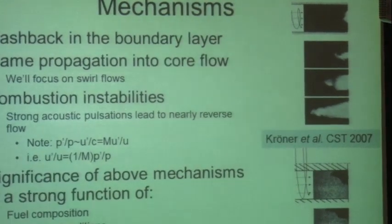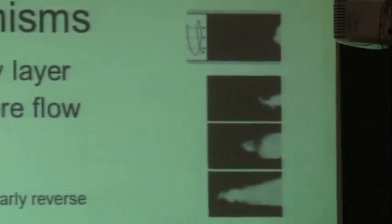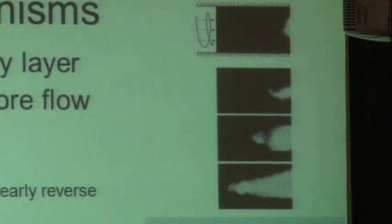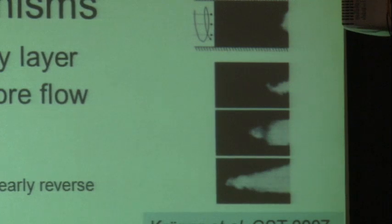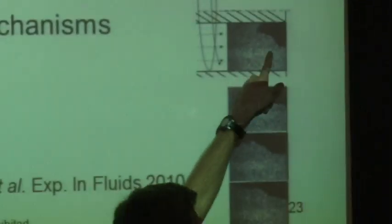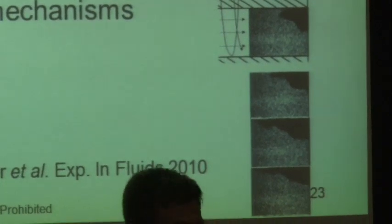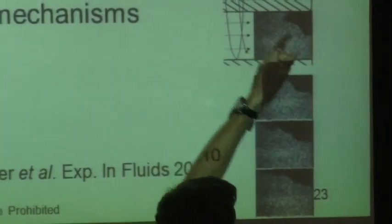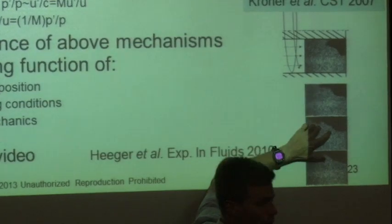This top-right image is an example of flashback in the core flow, showing the flame moving upstream. In this case, the flow is moving way faster than the flame speed — yet the flame is still propagating upstream, partly because the flow has swirl, which I'm indicating with that arrow. The bottom image is a Mie scattering image of a flame flashing back in a boundary layer. The flow is seeded with olive oil, going left to right, and the olive oil is consumed at the flame front. The flame is instantaneously propagating upstream through the boundary layer.